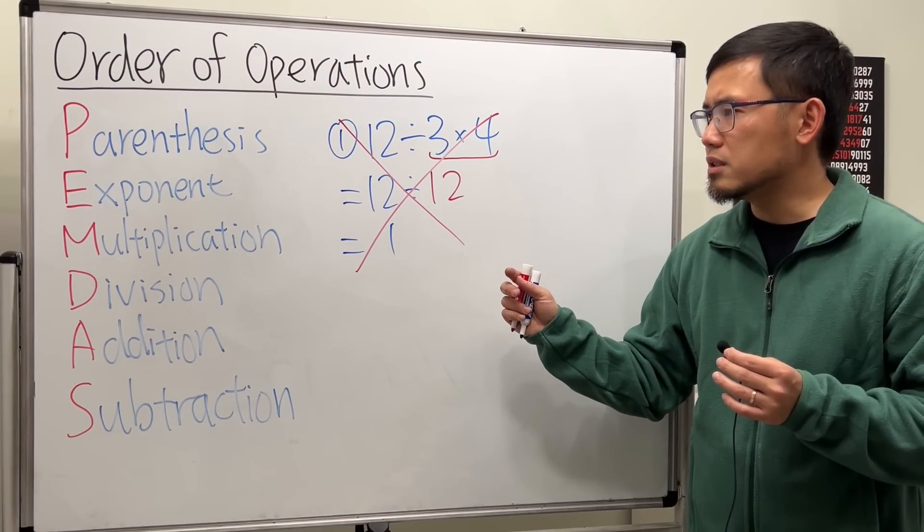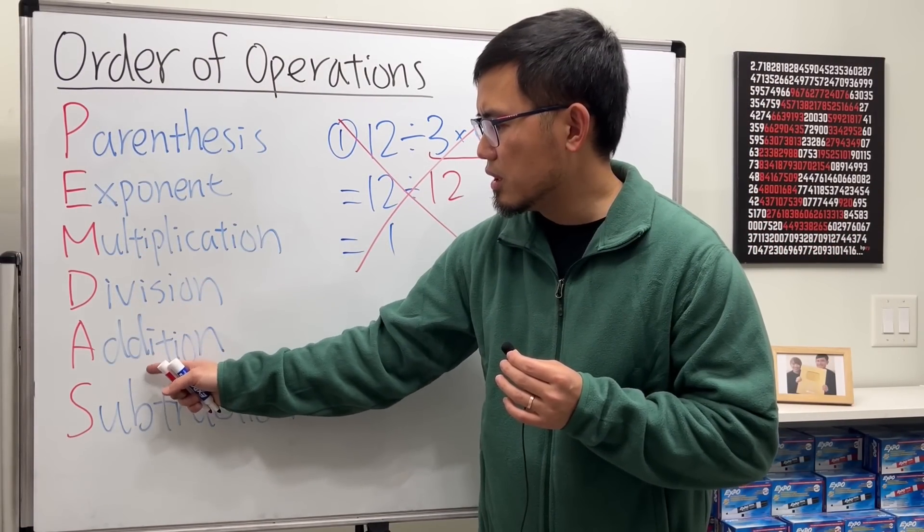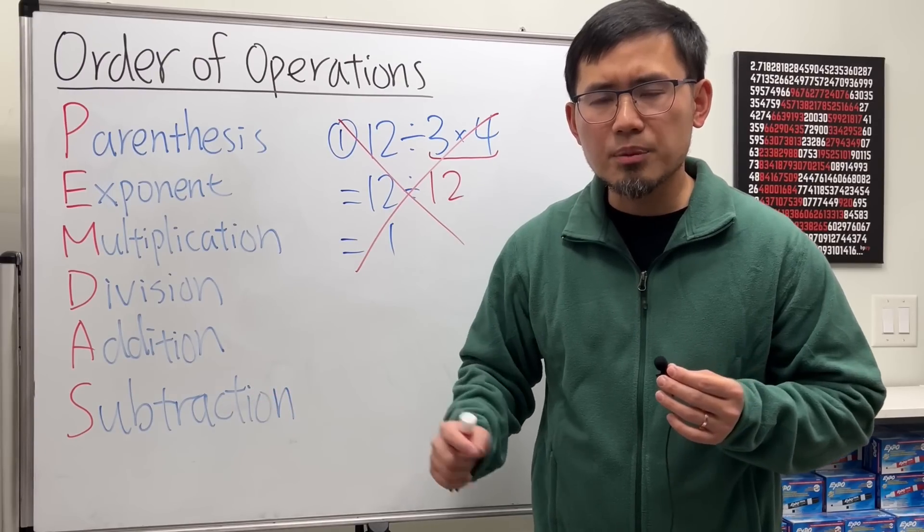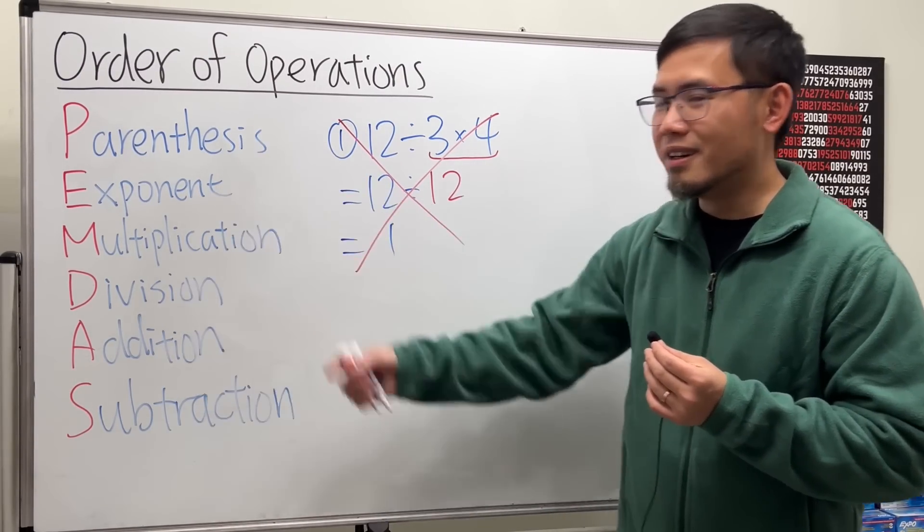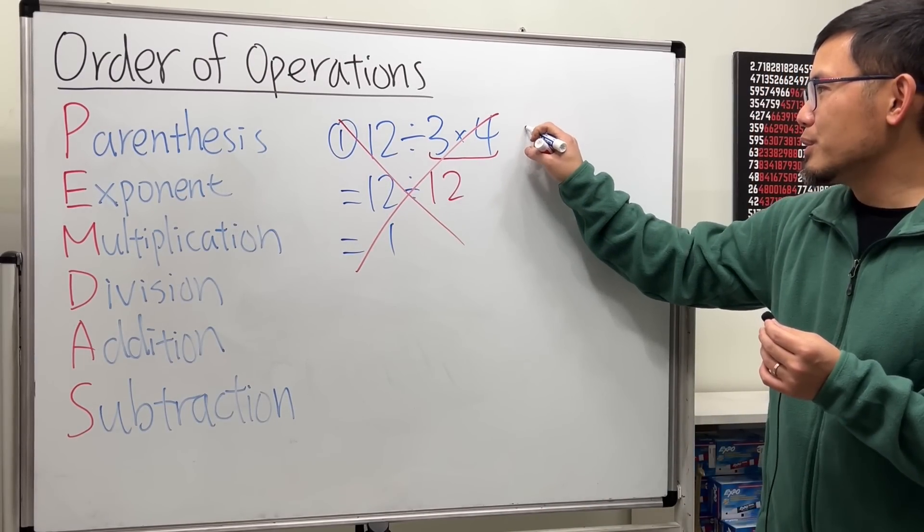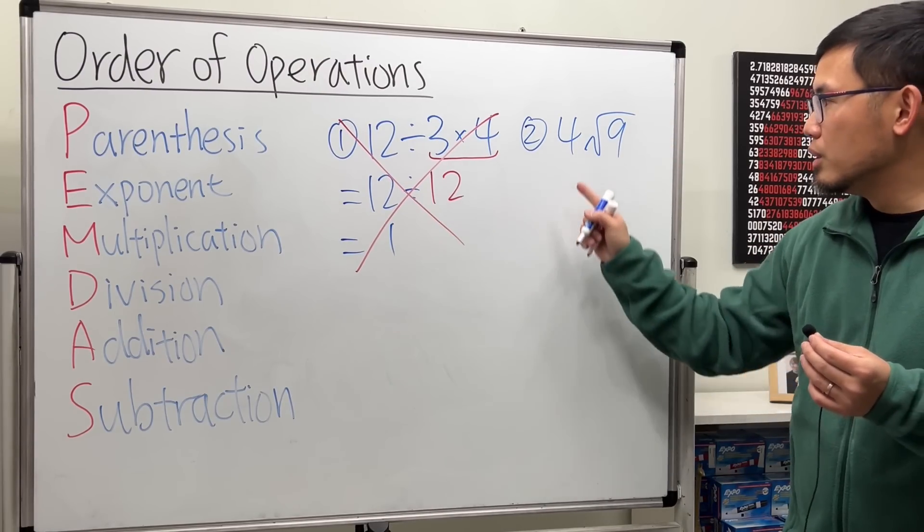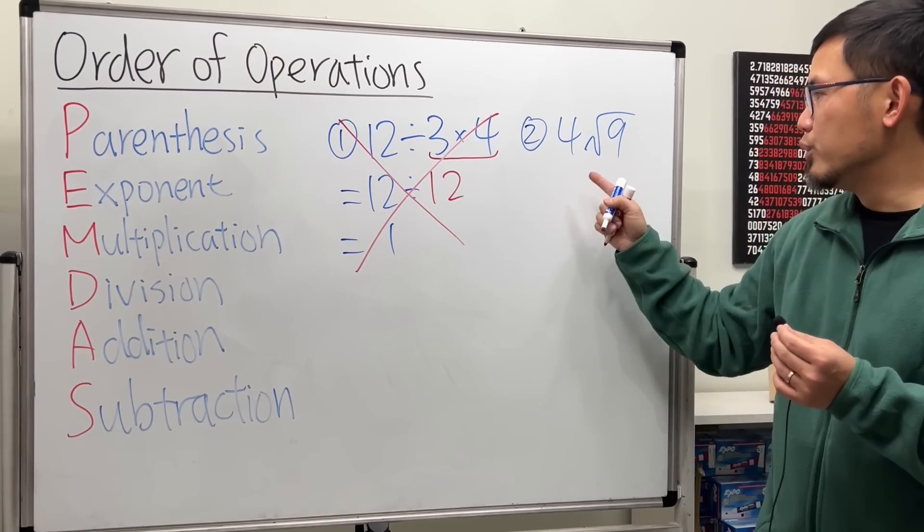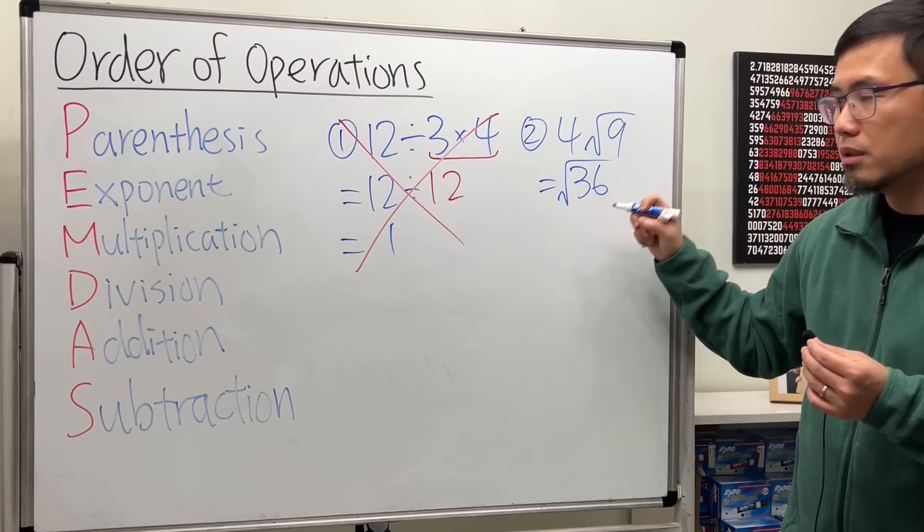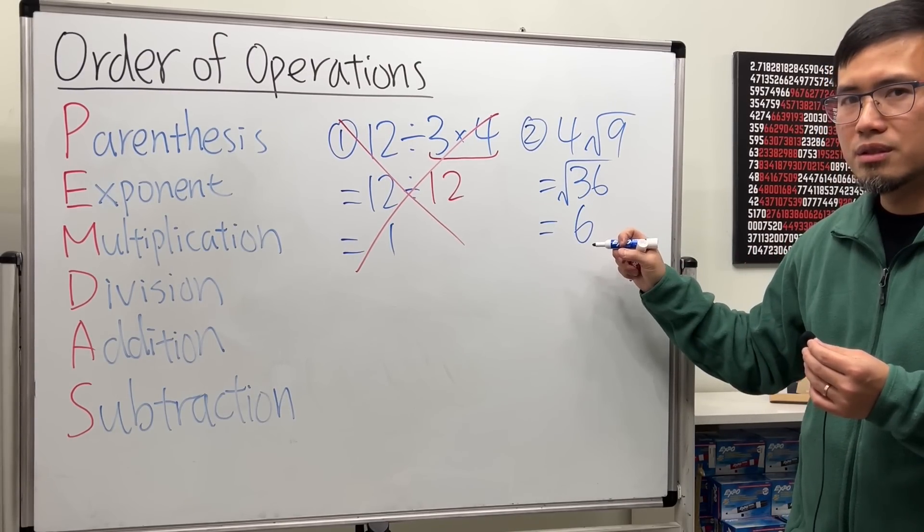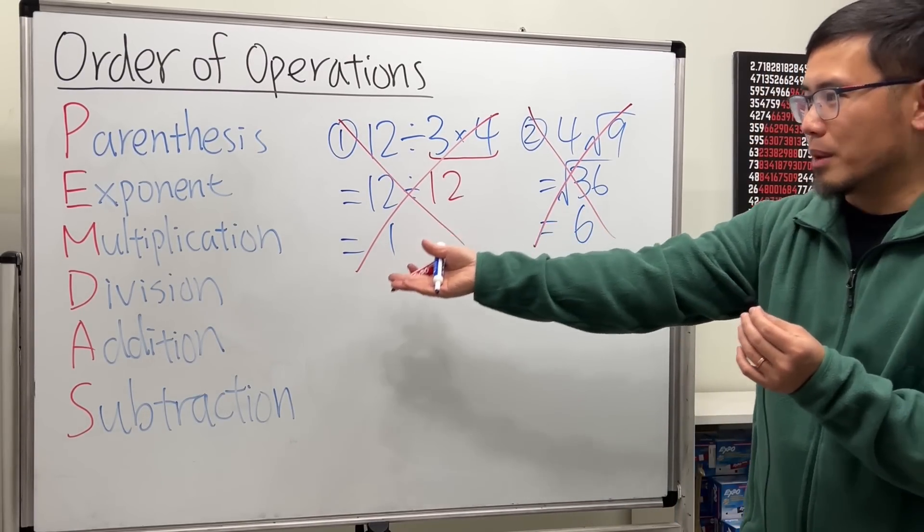The second problem is, when we have PEMDAS with Exponent, Multiplication, Division, Addition, and Subtraction, where are the other operations such as the square root? It's not here, right? So if I have to do the equation 4 times square root of 9 like this, what do we do first? Do we multiply first? If we do that, 4 times 9 we get 36, and then do the square root. Square root of 36, we get 6. No, this is also not correct.